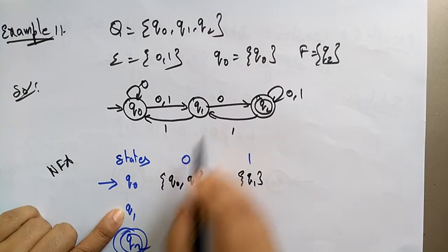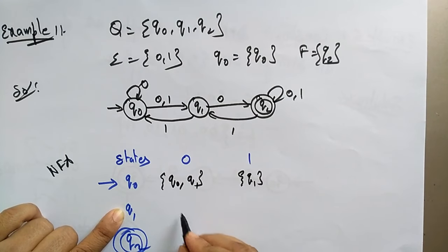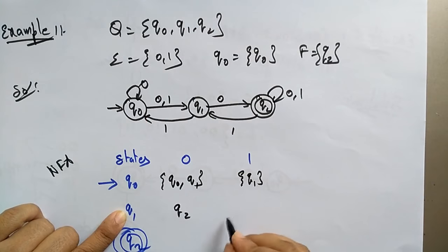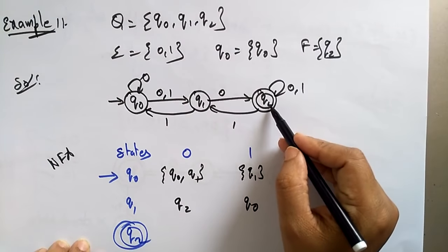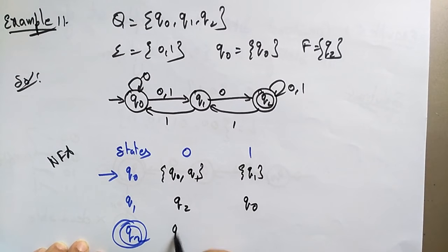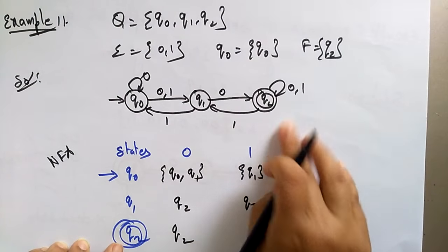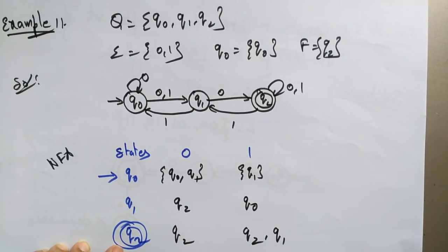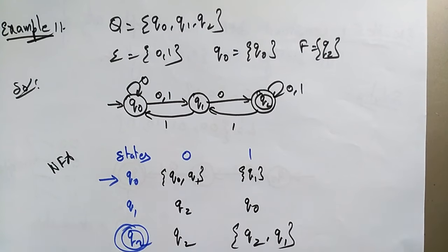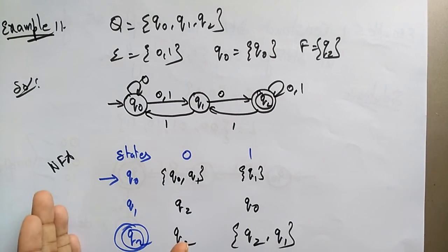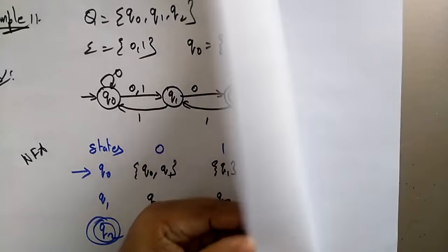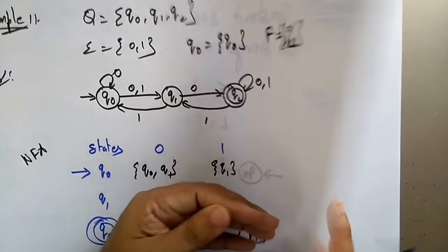Q1 on 0 goes to q2. Q1 on 1 goes to q2 as well as q1. This is the state transition table for the given diagram. That is one way of asking the question. Let me take another example to explain NFA.